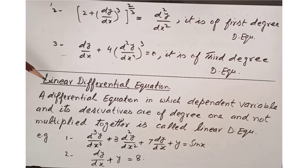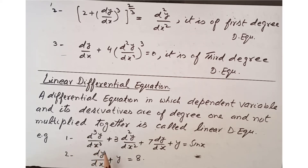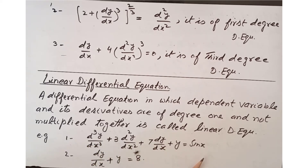The definition of a linear differential equation: a differential equation in which the dependent variable and its derivatives are all of degree 1 and are not multiplied together is called a linear differential equation. For example, d³y over dx³ plus a d²y over dx² plus 7 dy over dx plus y equals sin x is linear, because no term involves y multiplied by any derivative term.